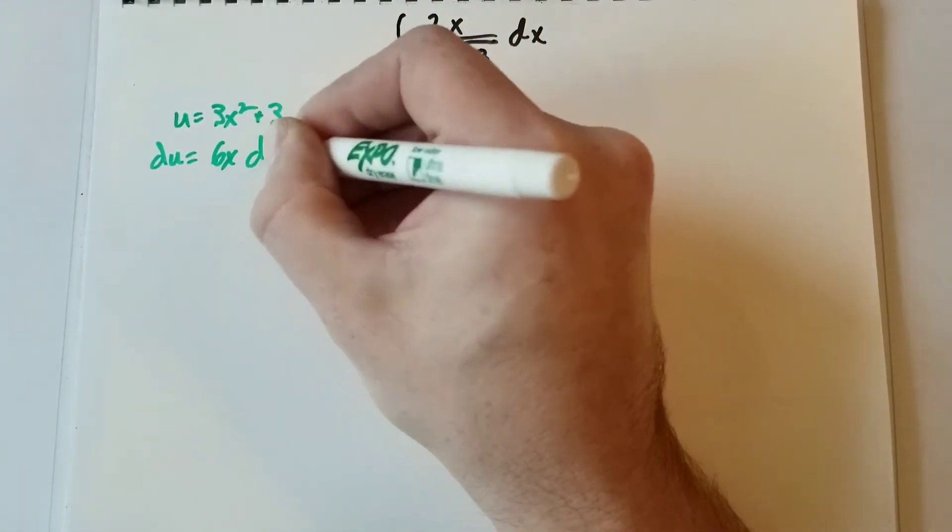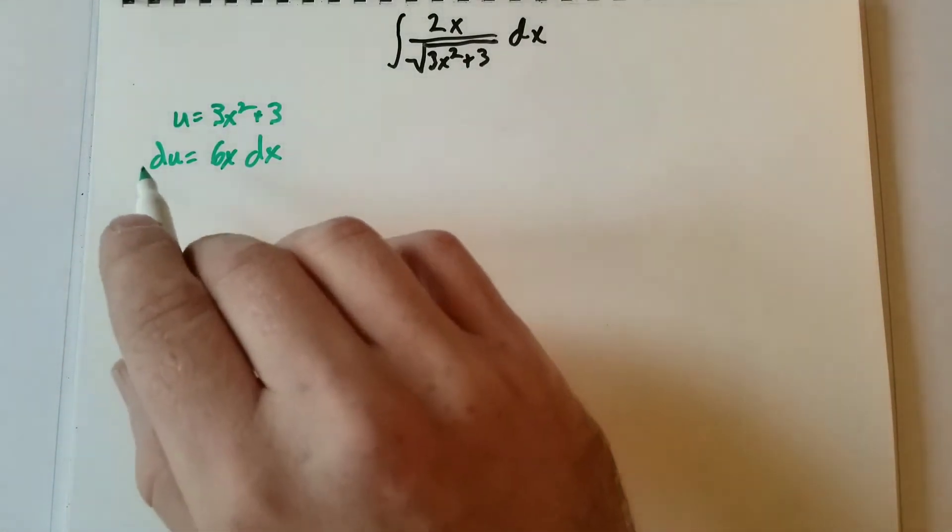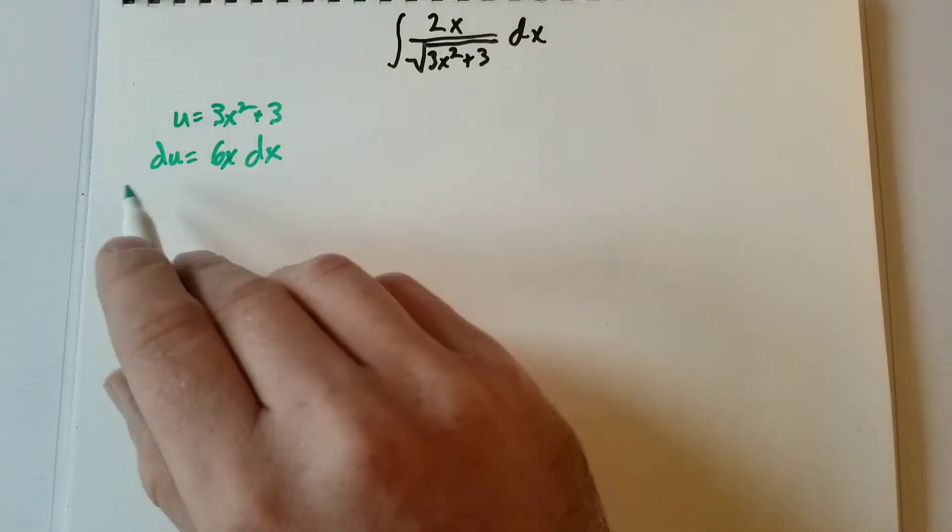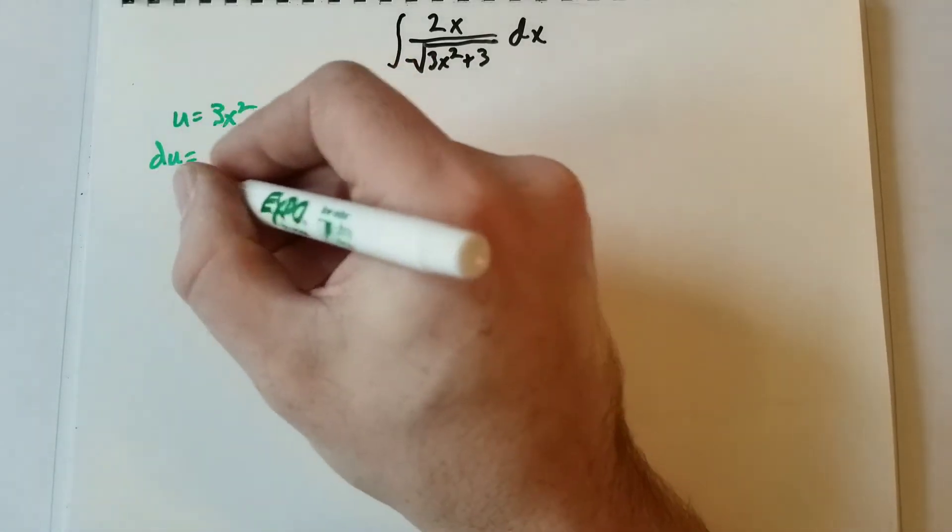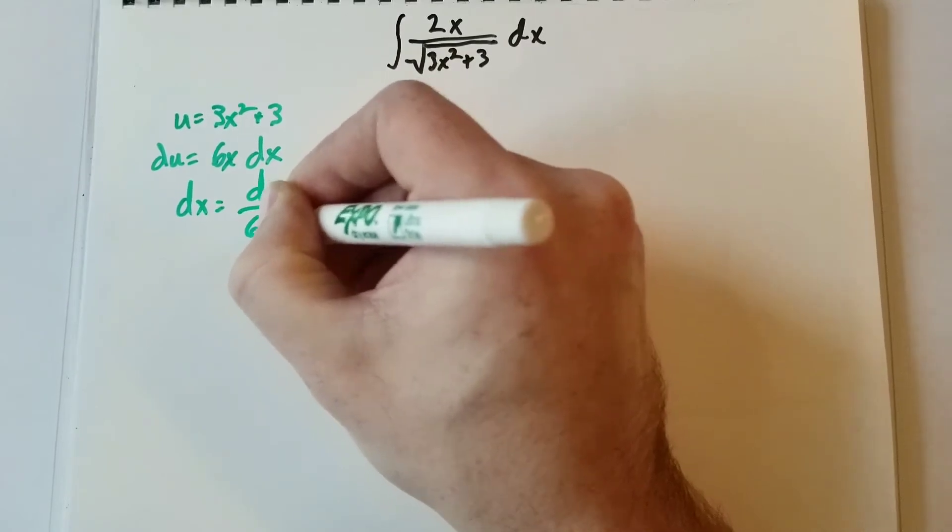And don't forget your dx. Now we want to get the dx all by itself because this dx is going to be replaced with du. So we need dx all by itself. So we divide both sides by 6x, which gets us dx equals du over 6x.